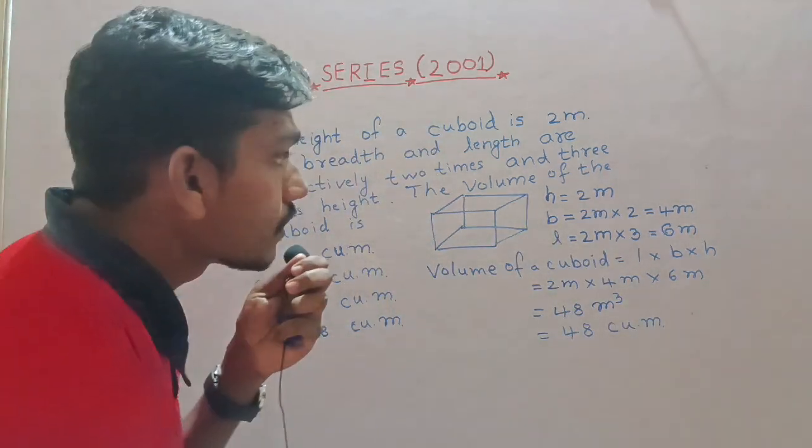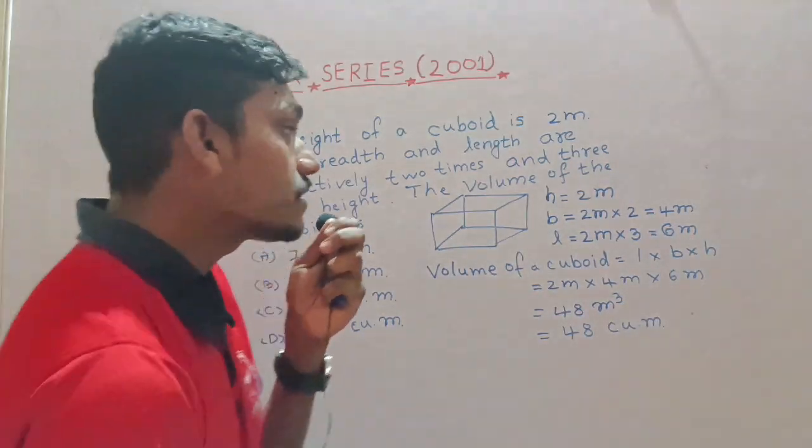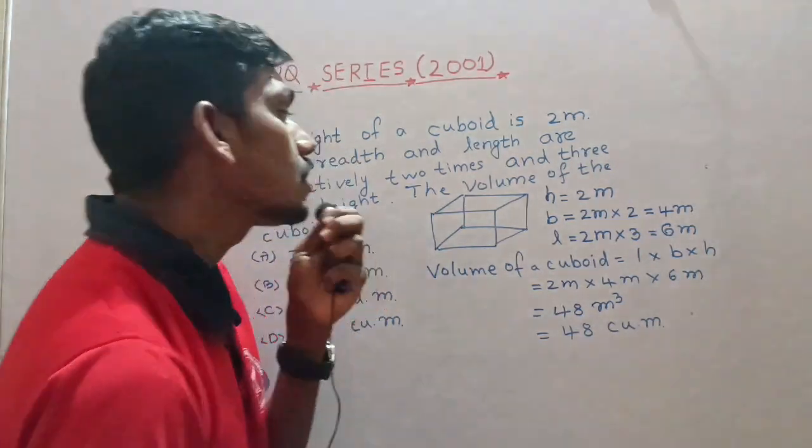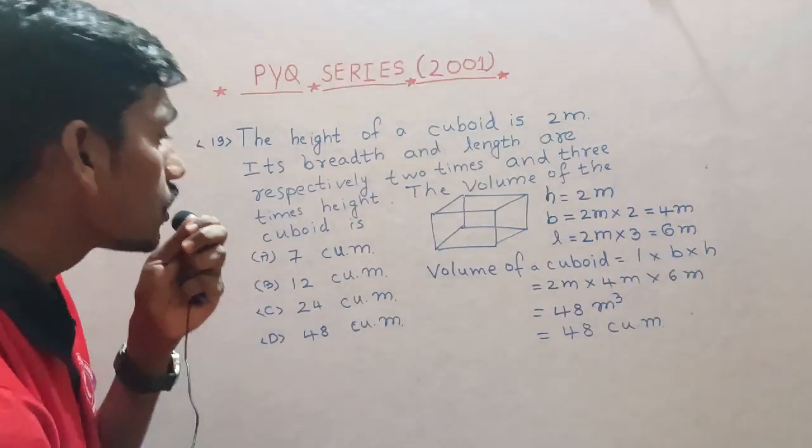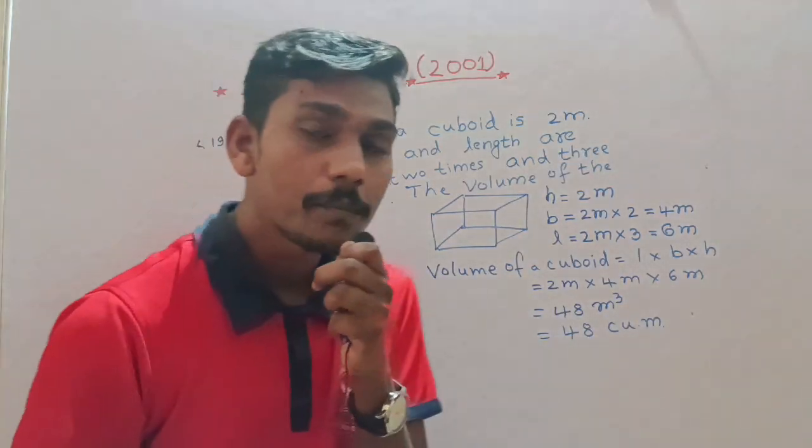2m height, 4m breadth, 6m length. Cuboid volume is 48 cubic meters.